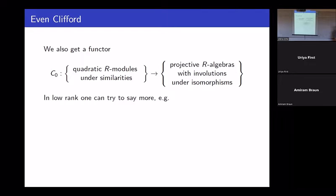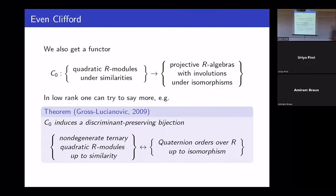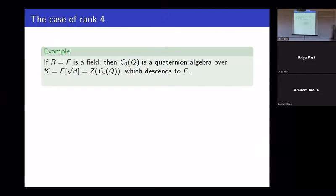In my talk I want to focus on even Clifford, which gives a functor from quadratic R-modules with similarities to projective R-algebras with involutions. I will be interested in things that happen in low rank, where we can say more. For example, a result by Brus and Lucjanovic shows that in rank 3, we have a discriminant-preserving bijection between non-degenerate ternary quadratic R-modules and quaternion orders over R. Before saying something similar for rank 4, I'll give an example of why it's not as simple as the rank 3 case.